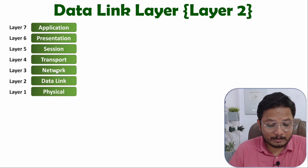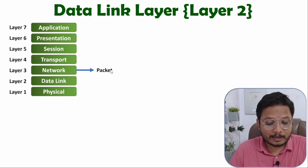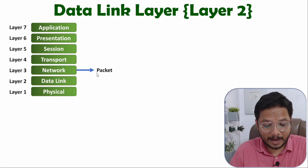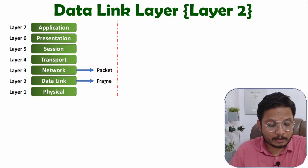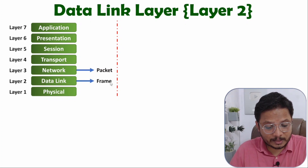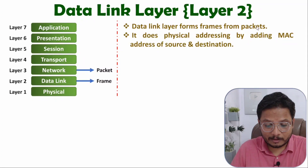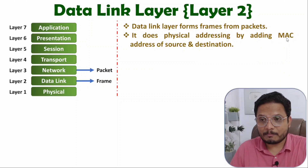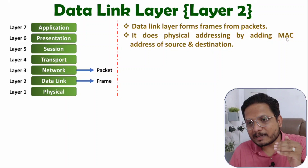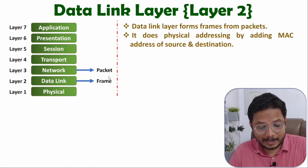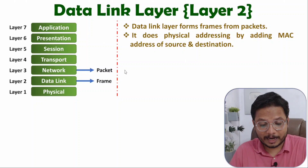The Network Layer gives packets to the Data Link Layer, so the input to the Data Link Layer is a packet, and the output is frames. To form frames, the Data Link Layer adds the physical address of source and destination — the MAC address. The MAC address is a physical address, so the MAC address of source and destination is added at the Data Link Layer to form a frame from the packet.